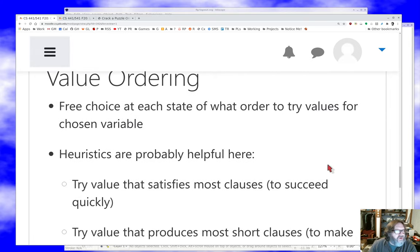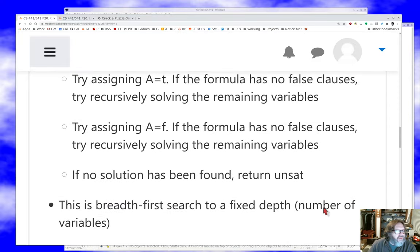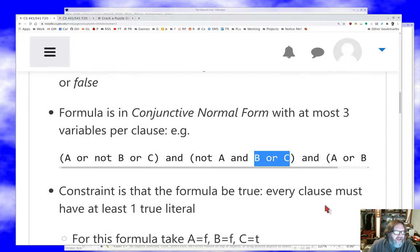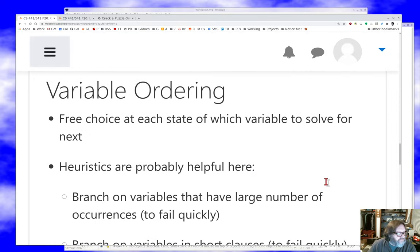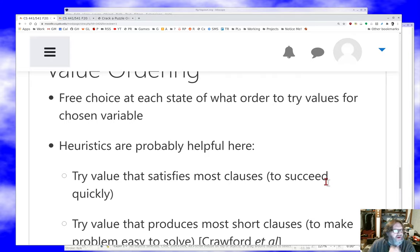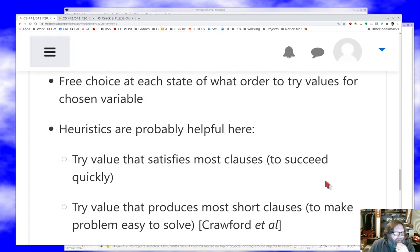The other thing is we had a choice of whether to try true or false, right? I could absolutely have searched when I started with A. I could have chosen A true or A false, and because we were focused on the left clause, we naturally chose true, but I could have chosen false first. So which one should I try? Well, there again, probably heuristics of some kind. And the heuristic that I might want to choose are, you want to cut the problem down as fast as you can, so you try the value that satisfies the most clauses.